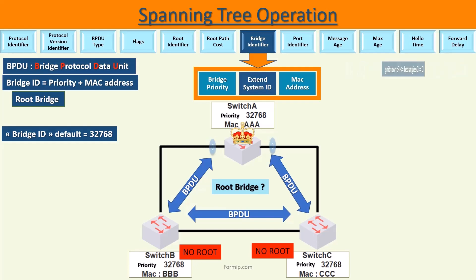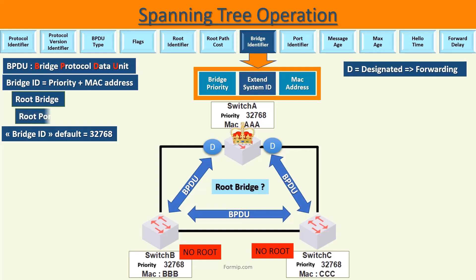The ports on a root bridge are always tagged designated, which means they are in a forwarding state. We will come back to the different port states later. Here we mark with the letter D the designated ports of the switch elected as the root bridge. Now that we have found the root bridge, the next step in spanning tree computation is to find the shortest path to the root bridge — this path is called the root port. Here are the ports that will be marked as root port, as they have the fastest way to access the root bridge.